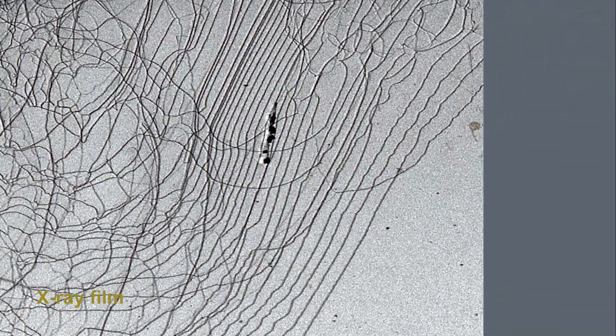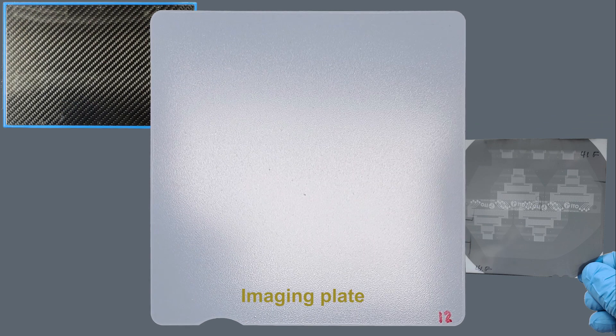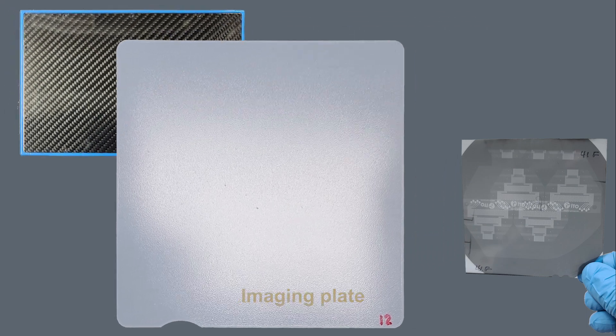With X-ray topography, a single dislocation can easily be observed and will appear as a line on the image. The typical detectors used for XRT measurements are area detectors such as image plates, which can be thought of as reusable X-ray films.